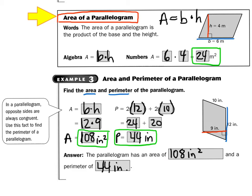For the perimeter, we just add all the outside edges. The perimeter would be 12 plus 10 plus 12 plus 10 — there are two sides that are 12 and two sides that are 10. So I would do 2 times 12 plus 2 times 10: that's 24 plus 20, which gives me 44 inches. Remember, perimeter is just the outside edges, so we label it in inches, not square inches.